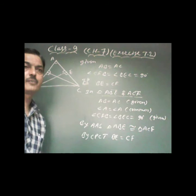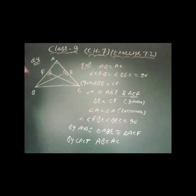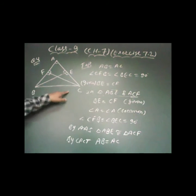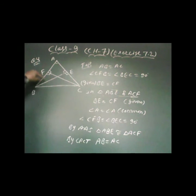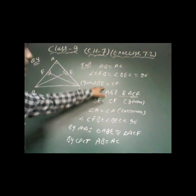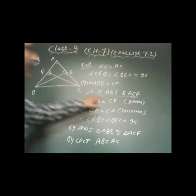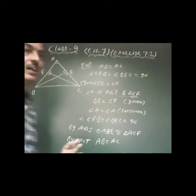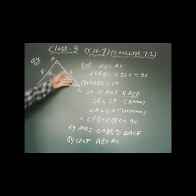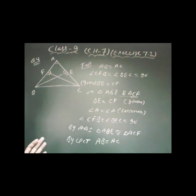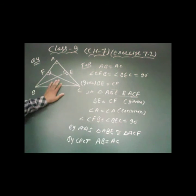In question number 4, the same diagram is used. Here BD and CF are given as equal altitudes, and we need to prove triangle ABE and ACF are congruent, and in the second part that AB is equal to AC — meaning triangle ABC is an isosceles triangle.